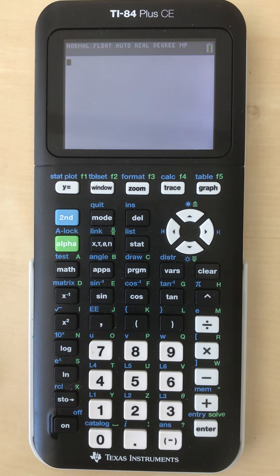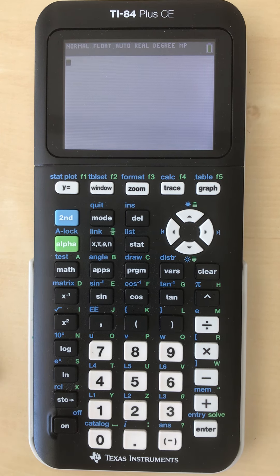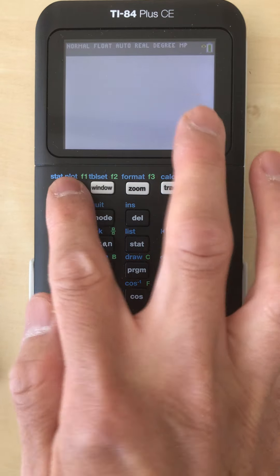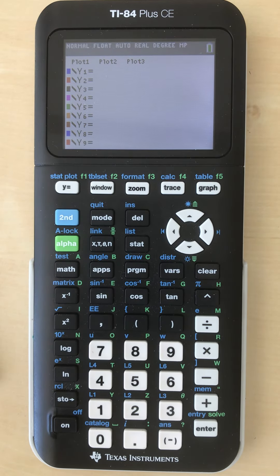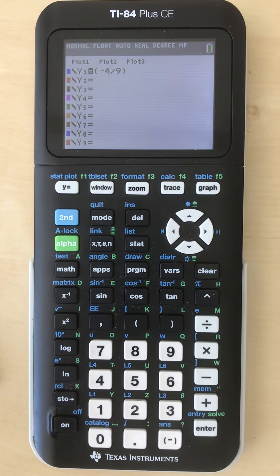We have another example, another graph: y equals negative 4 ninths times (x minus 15) squared plus 100. How do I know that equation works? Well, let's go to our graphing function here: y equals negative 4 ninths times (x minus 15) squared plus 100.